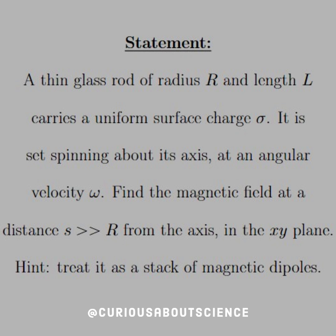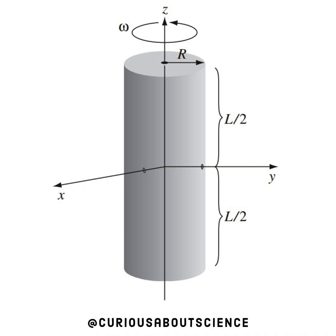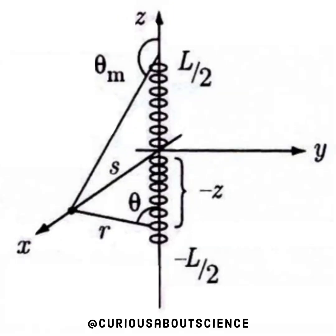Hint: treat it as a stack of magnetic dipoles. Alright, let's first consider the glass rod. We see that it is spinning with angular velocity omega about z, has a length L split evenly above the xy plane in L over two parts, and has radius R. Now we know we want to solve this for some point in the xy plane - why not let's have it on the x-axis for the sake of argument.